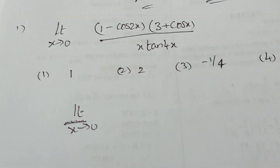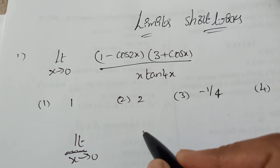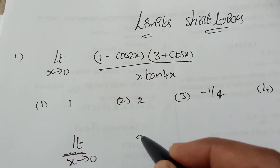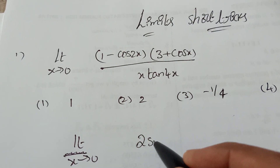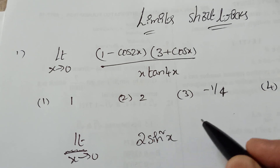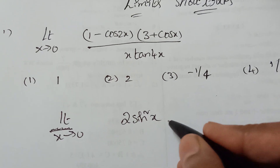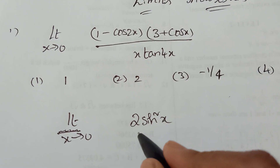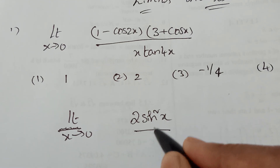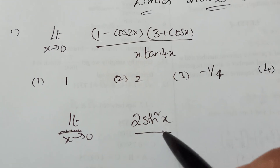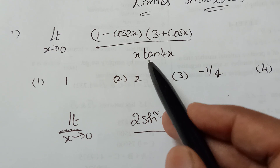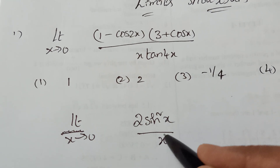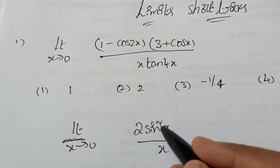Now write limit x tends to 0. You know that 1 − cos2x equals 2sin²x. So replace it with 2sin²x. Now splitting: there is an x term in the denominator and sin²x in the numerator, so we handle the square form carefully.